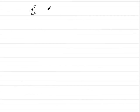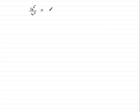Hi, welcome to this tutorial on dividing expressions containing indices or powers. In this example we've got 4 to the power 5 divided by 4 to the power 3, or some people say 4 cubed. And what does this simplify to?